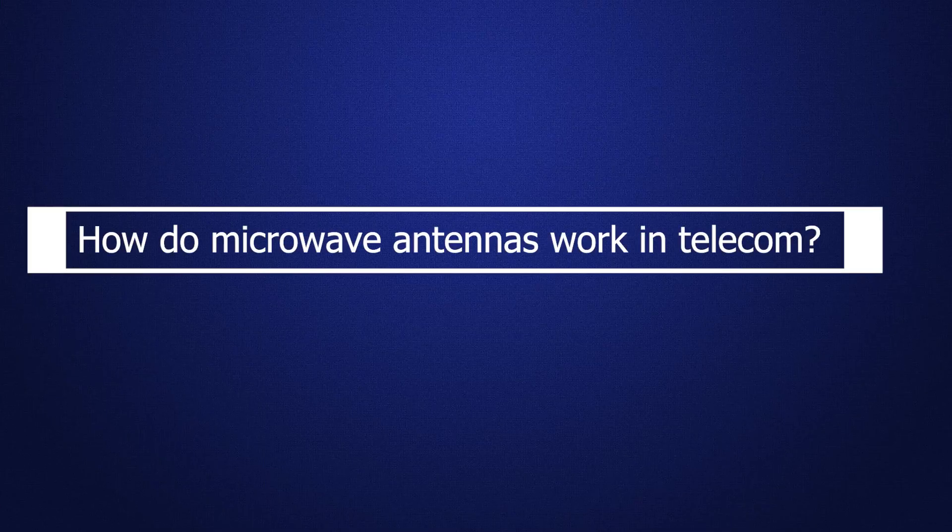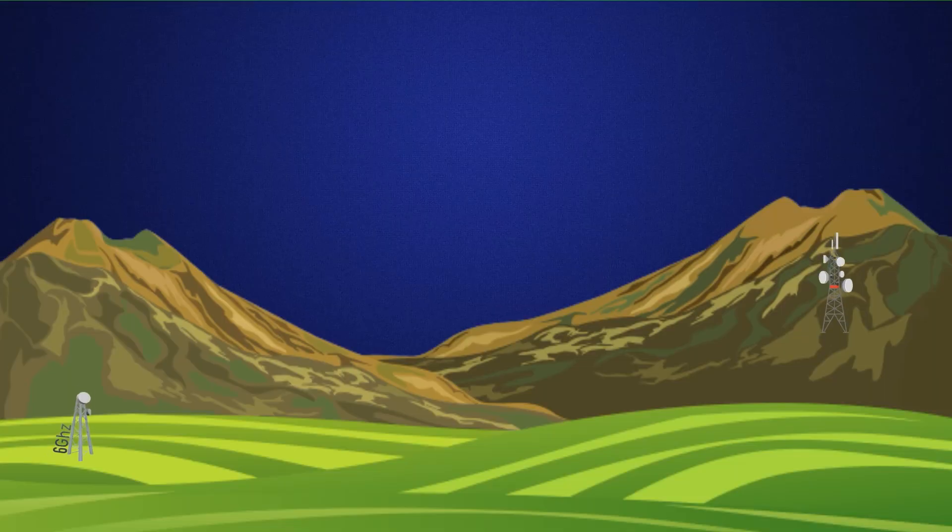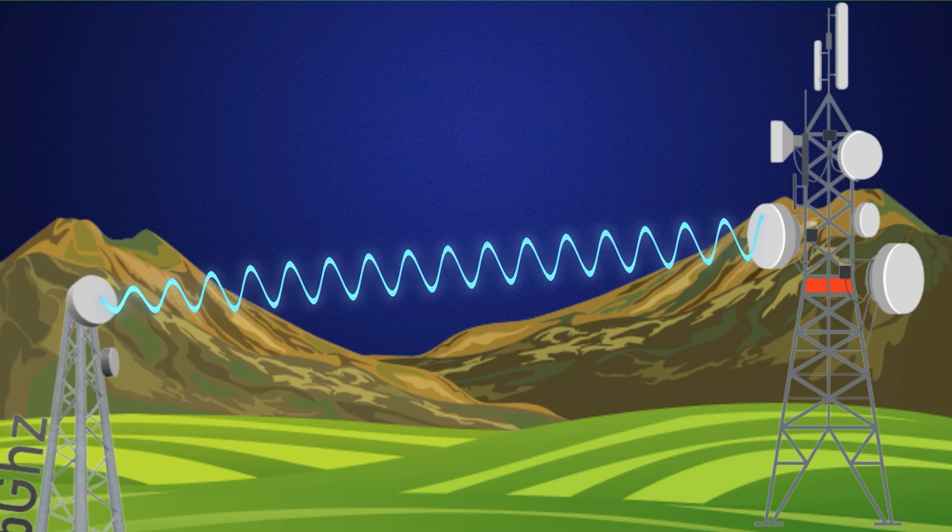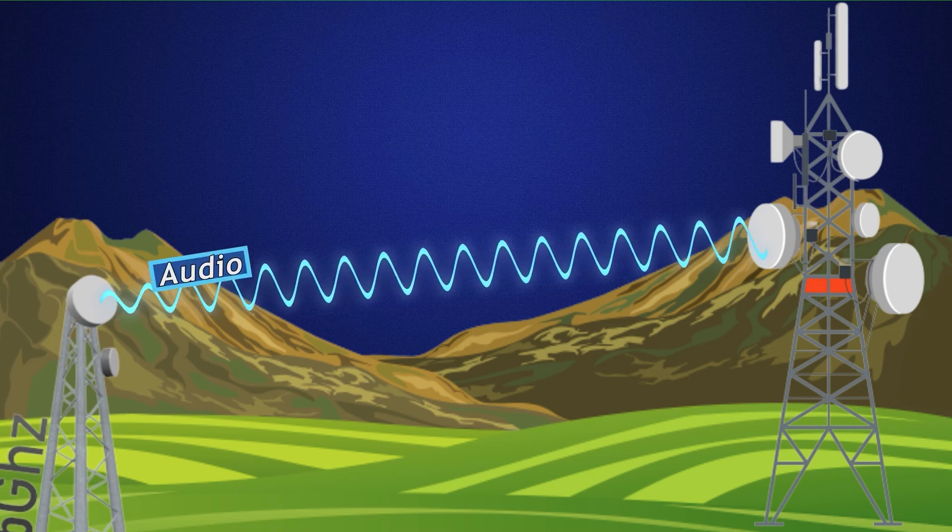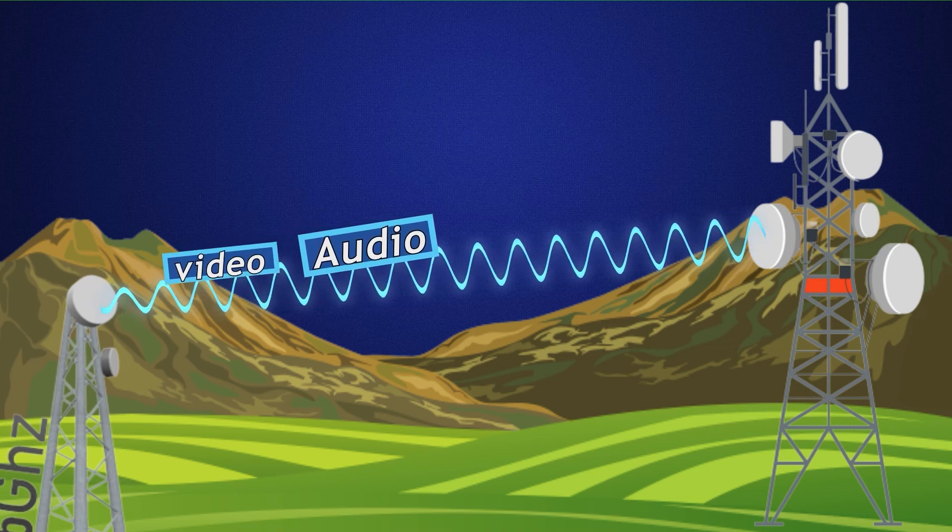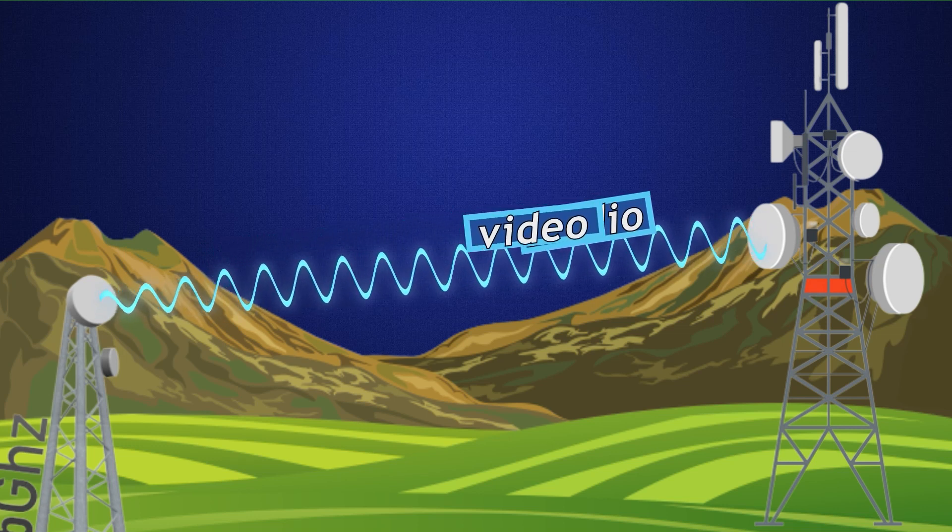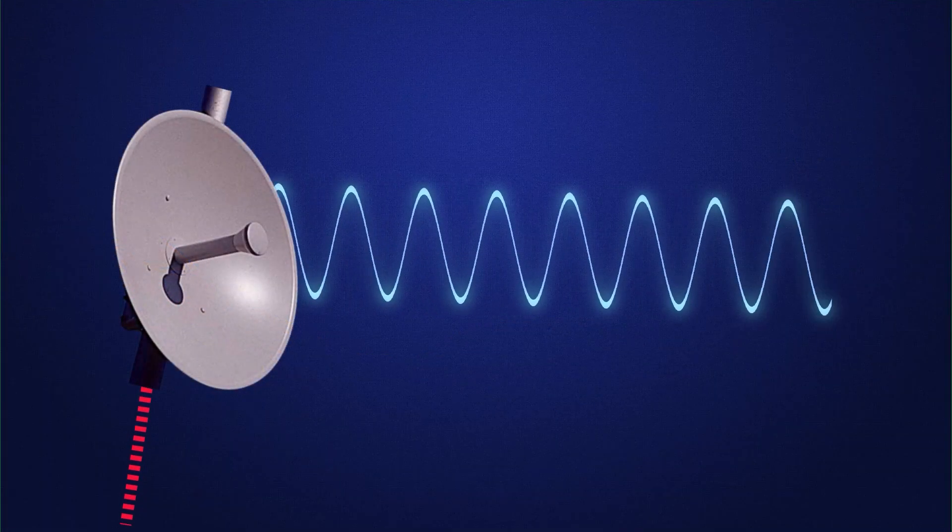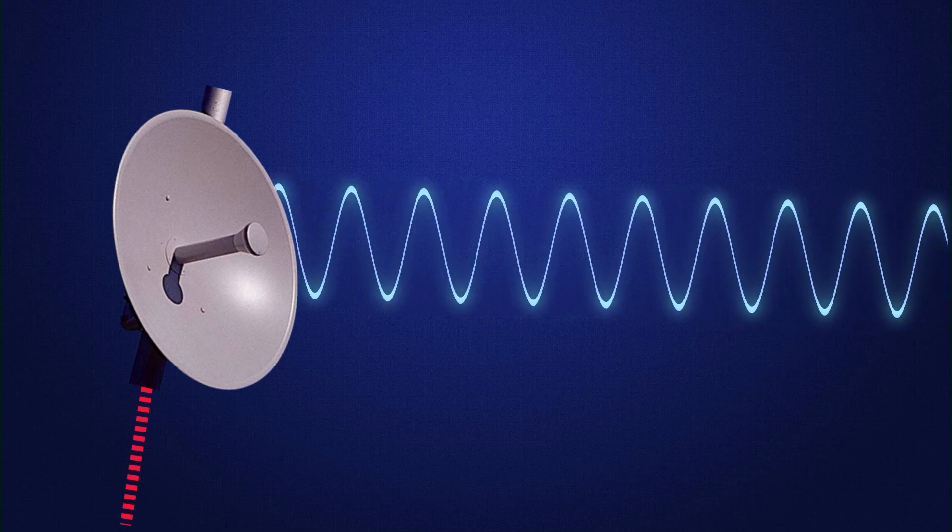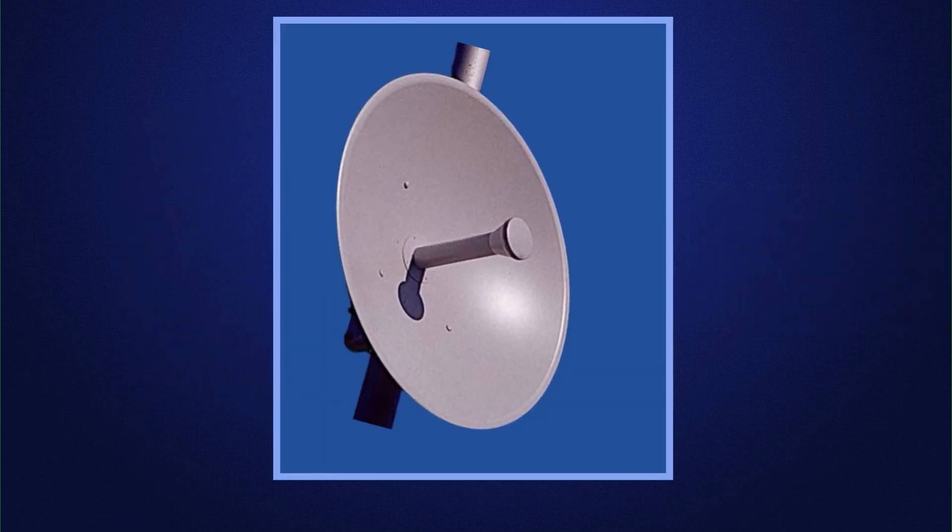How do microwave antennas work in telecom? Microwave antennas are used in telecom to transmit and receive signals between two or more points. The antennas are typically mounted on towers or buildings, and they are aligned so that the beams from the antennas overlap. This overlap area is called the coverage area.